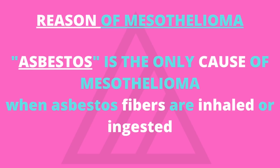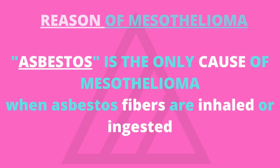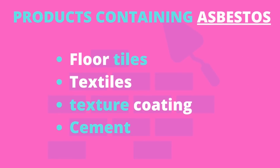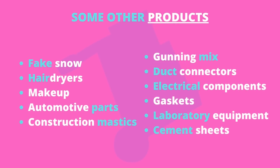Any amount of asbestos exposure can cause mesothelioma. The most common materials in which asbestos is found include floor tiles, textiles and composites, textured coatings, asbestos cement products, roofing felt, asbestos insulating boards, sprayed coatings on ceilings, walls, beams and columns, and loose asbestos found in ceiling and floor cavities.